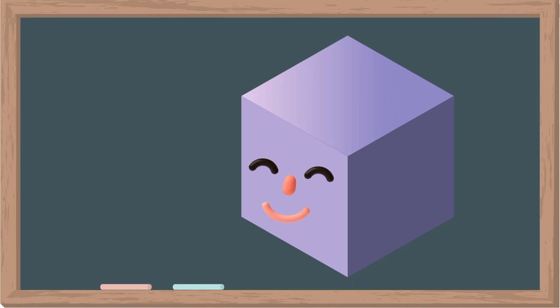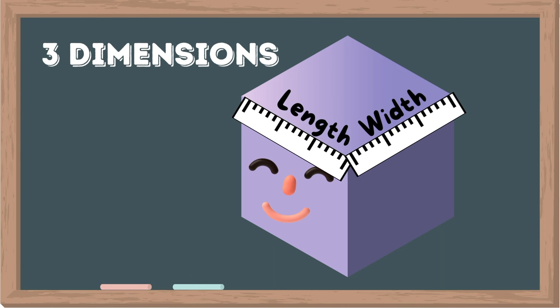A three-dimensional, or 3D, shape is a shape that has three dimensions: length, width, and height.